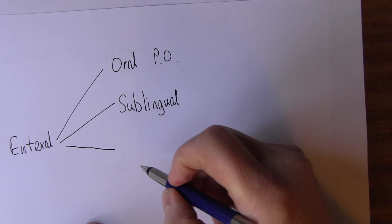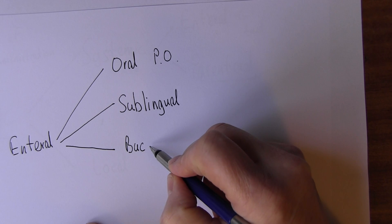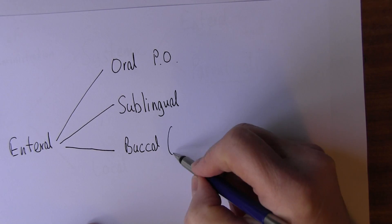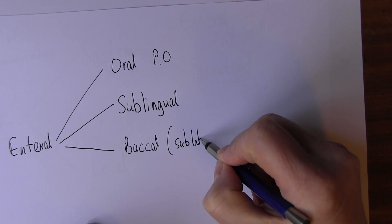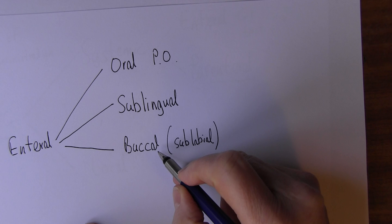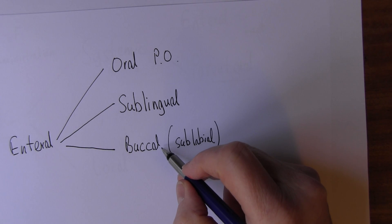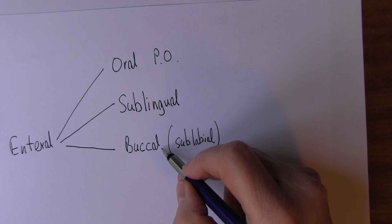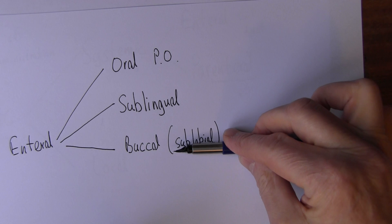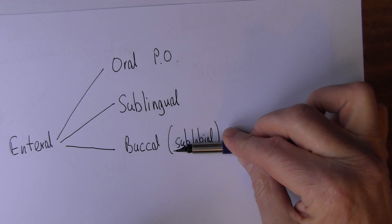We can also give drugs into the mouth — sometimes called buccal administration, or sublabial. We give the medicine in between the cheek and the gums. For example, after someone's had a myocardial infarction we might give buccal aspirin: we ask the patient to take 300 milligrams of aspirin, put it into their mouth but not swallow it. It will be absorbed more quickly through the mucosa in the mouth than through the mucosa in the stomach, and it won't go through the liver first.